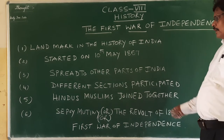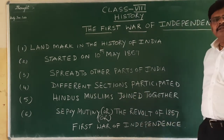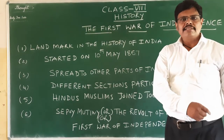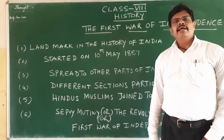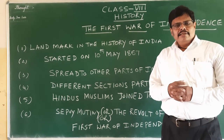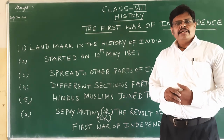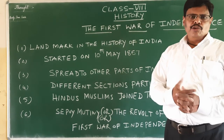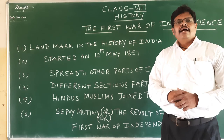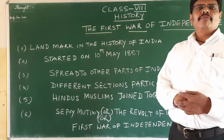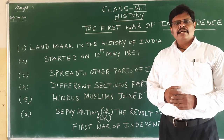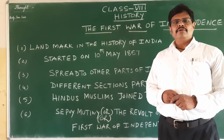In history, Indian historians called this the first war of independence because all sections of Indian society came together and fought against foreign domination, wanting to make India free. The British, however, regarded this as a sepoy mutiny since it was started by the sepoys of Meerut Cantonment. In the next video, we will discuss the main causes of the revolt of 1857.